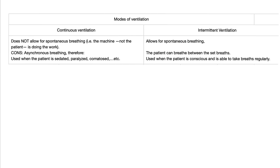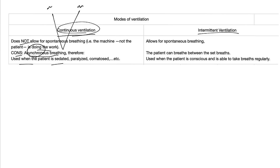There are two main modes of ventilation: continuous ventilation and intermittent ventilation. Continuous does not allow for spontaneous breathing — the machine, not the patient, is doing the work of breathing. The con is asynchronous breathing: if the patient tries to breathe at a different rate than the machine, asynchrony occurs. Therefore, only use continuous ventilation if the patient is sedated, paralyzed, or in deep coma — so only the machine is working and asynchrony will not happen.